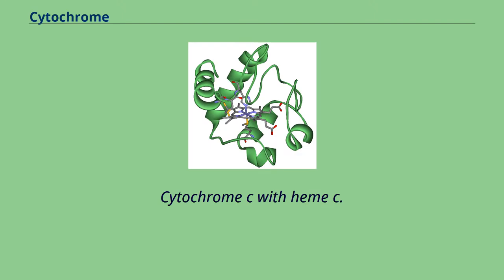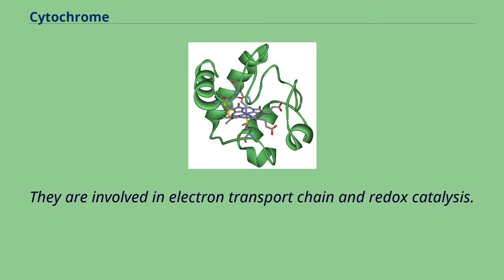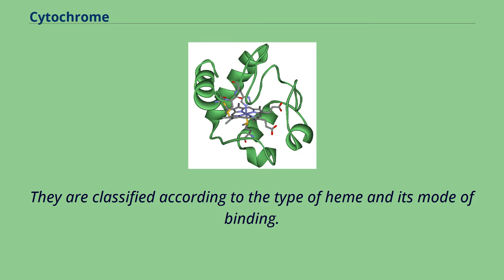Cytochrome C with heme C. Cytochromes are redox active proteins containing a heme, with a central iron atom at its core as a cofactor. They are involved in the electron transport chain and redox catalysis. They are classified according to the type of heme and its mode of binding.